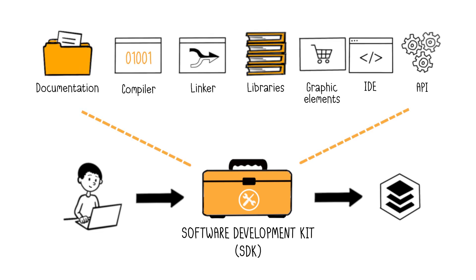Each SDK is different and may include more or fewer tools with it. You can typically find documentation, serving as a user manual for the SDK, a compiler, which translates human-readable source code into machine-readable binary code, a linker, which links modules and libraries into an executable file, and code libraries — in other words, code already written by other developers that can be reused.